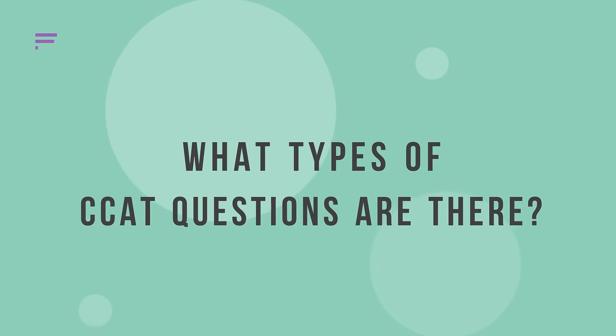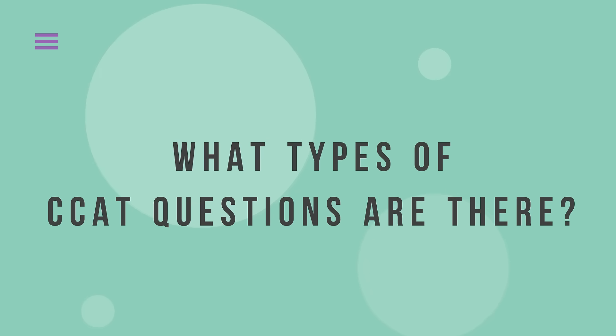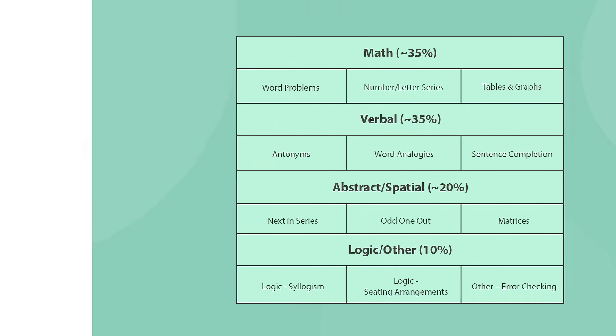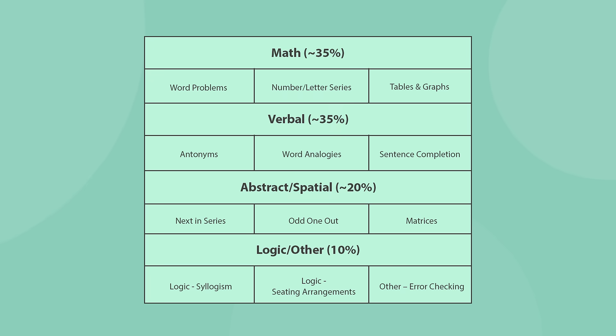But before we start solving, let's go over the various types of questions you might encounter during the CCAT. The CCAT, or the Criteria Cognitive Aptitude Test, contains 50 questions divided into 4 main sections: